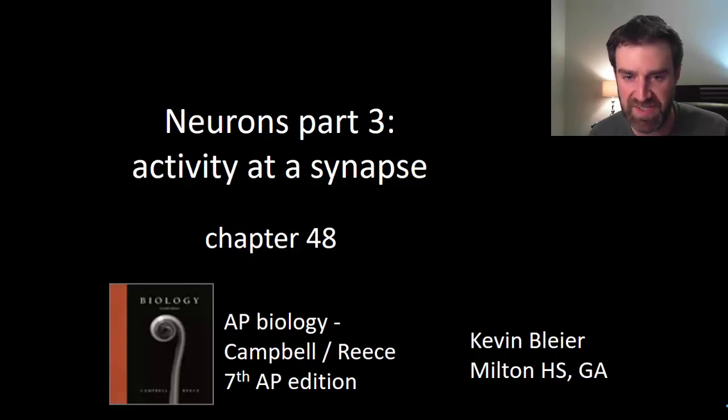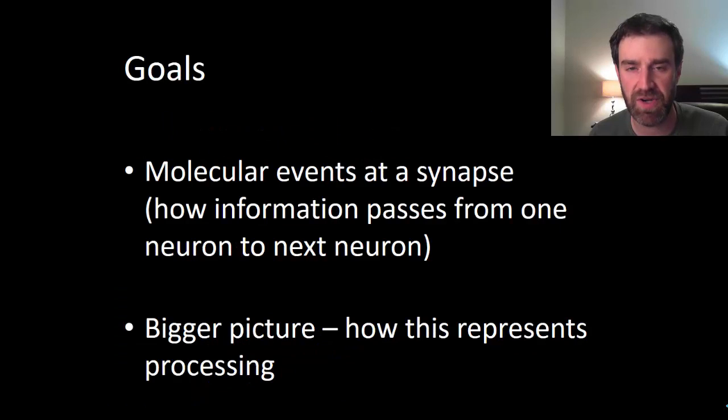In this video I'm going to review what happens at a synapse. We're going to try to review two things: the actual molecular events that occur, how the information is actually passed from one neuron to the next, and then I'm going to try to broaden that into a bigger picture and get you to see how that might represent the processing of information that takes place in your brain every second.